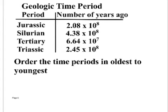So we look here. We have geological time periods. We have four periods. Jurassic, Silurian, Tertiary, and Triassic. Jurassic is 2.08 times ten to the eighth power years ago, right? Silurian is 4.3 times ten to the eighth years ago, and so forth.